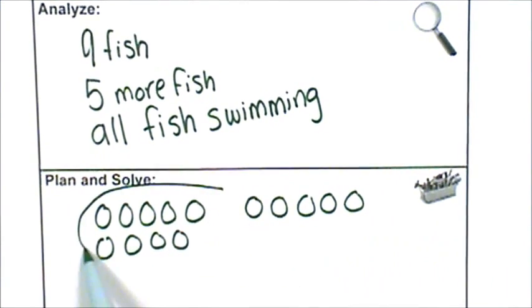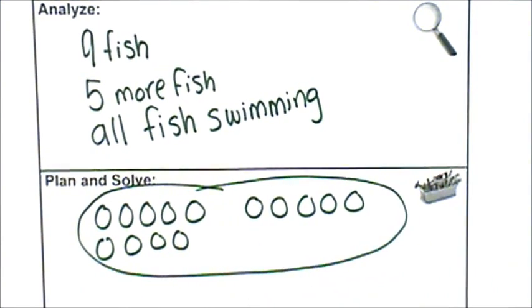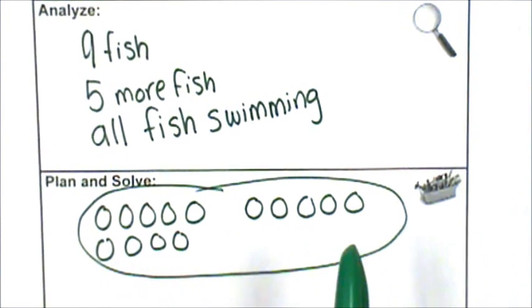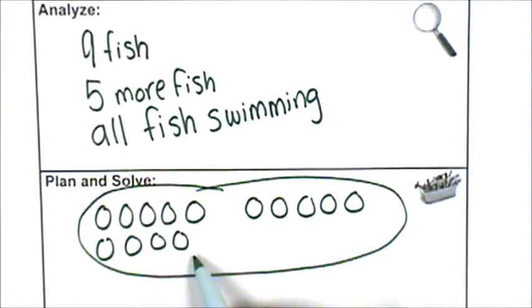Then, I want to know all the fish that were swimming. So, these are all fish. All of these are fish. Did I add or did I subtract fish? Well, I started off with nine and I joined five. Now, there's a lot more than when I started. That means I added nine plus five.